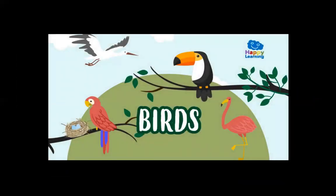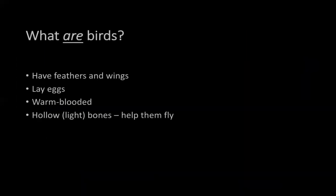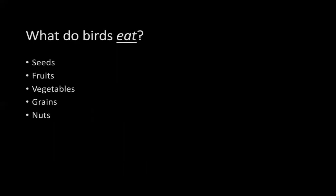The third group of animals we are learning about today are birds. Birds are animals that have feathers and wings, lay eggs, are warm-blooded, and have light bones that help them fly. What do birds eat? Birds usually eat seeds, fruits, vegetables, grains, or nuts.